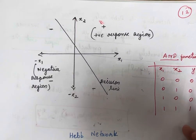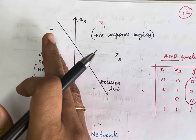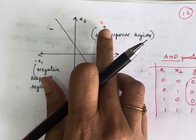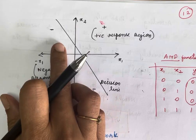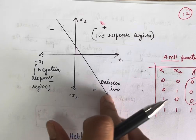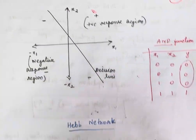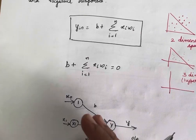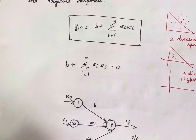When any one of the inputs is 0, your response is 0 — these fall in the negative response region. When both inputs are 1, you get output 1, which falls in the positive response region. So for the AND function, you can draw a decision line and confirm that this particular AND network can separate the positive region from the negative region.